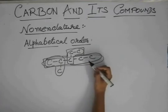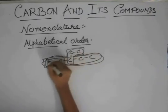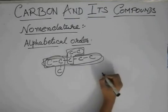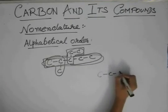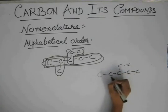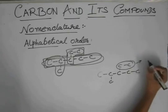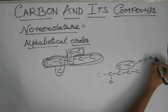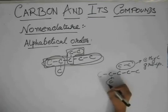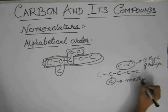See? So this chain and this chain are both the same. So we take this straight chain only as the longest chain, and this group is an ethyl group and this group is a methyl group.